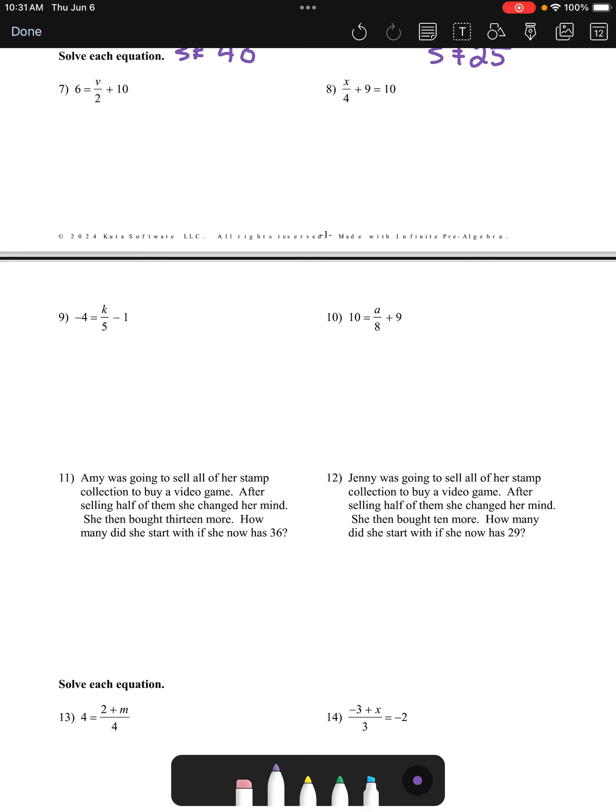So let's get to it. In number seven, the first thing we're going to do is remove the 10 from the right hand side, so we're going to have to subtract 10 from both sides. We're removing a positive 10.